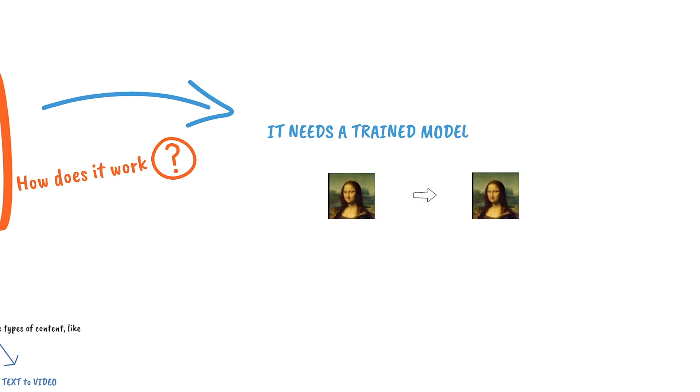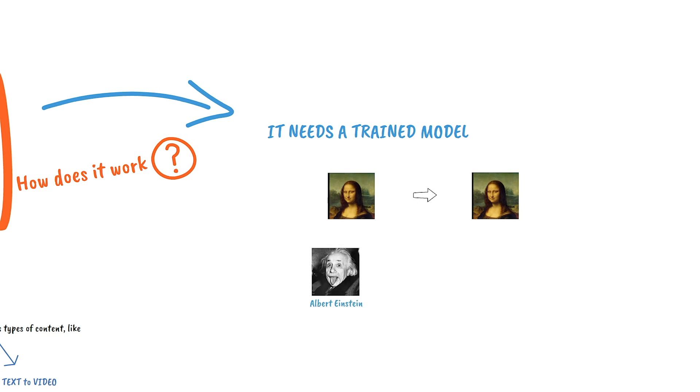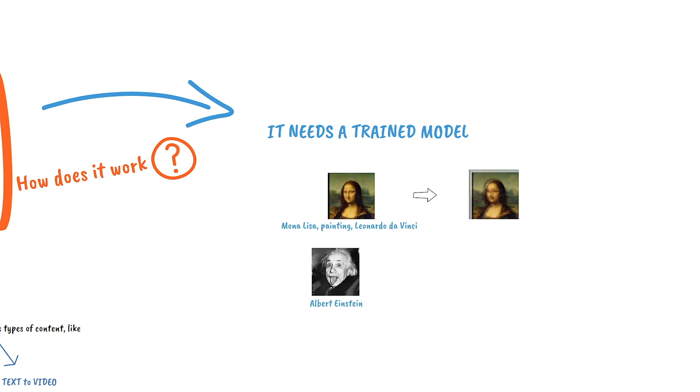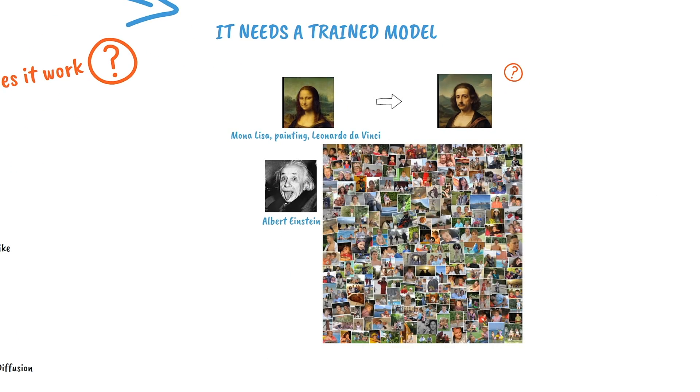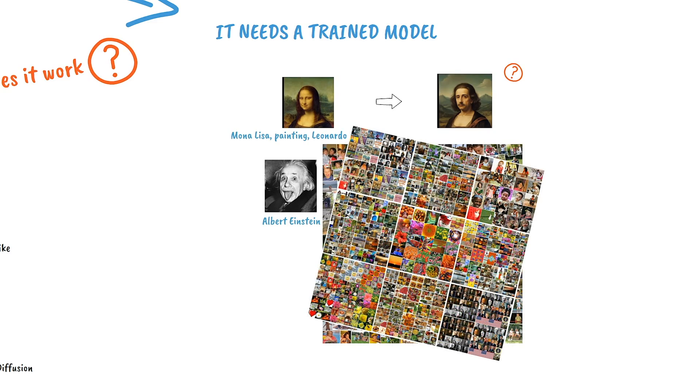But in a model trained only with Mona Lisa, all we can generate is Mona Lisa and that's quite boring. So we also need Albert Einstein. And we need an image description because we want to generate images from text. But how can we generate something completely new? Well, we need more images. And even more, we need all the images we can get.